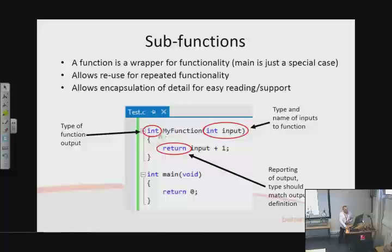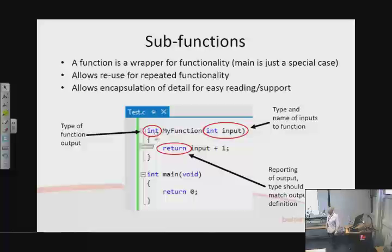Here we have the outputs from a function, we have an input — in this case you could have more than one, or none using that void operator. Here's the return keyword, which means send that back via the output. The type of the return ought to match the declared output type — if you had a float there and an int there, there could be trouble. Important to get that match right.